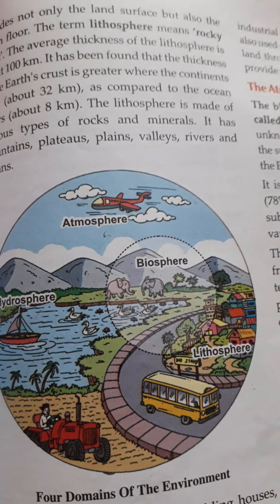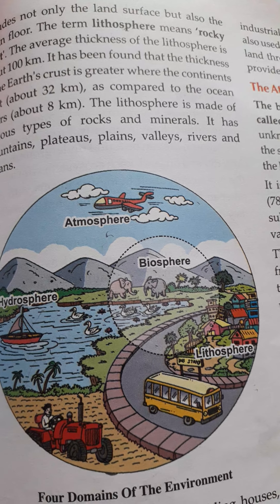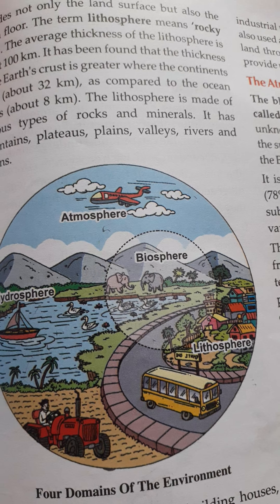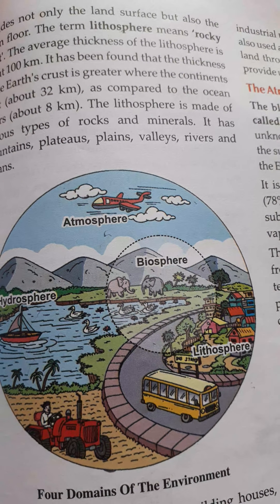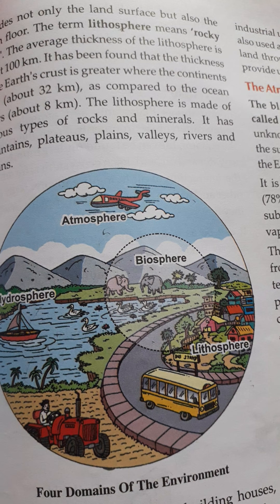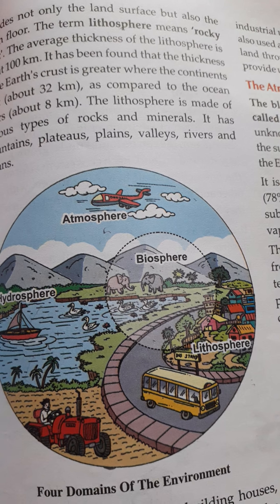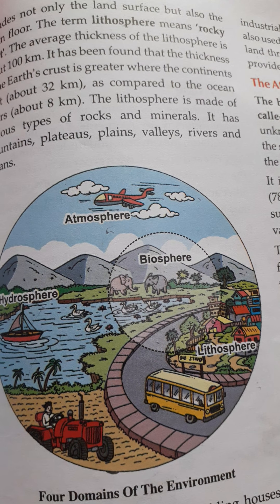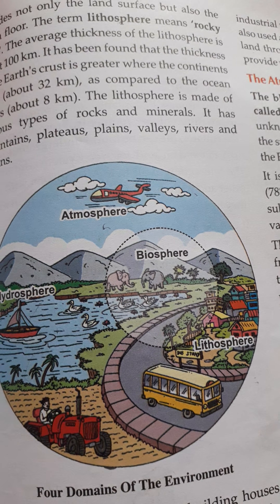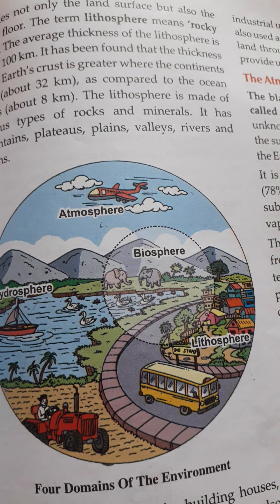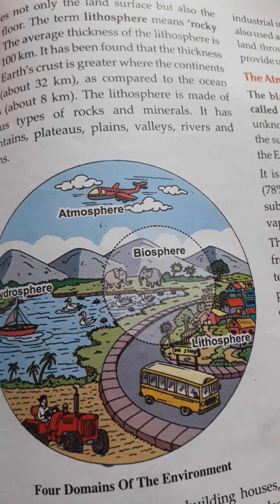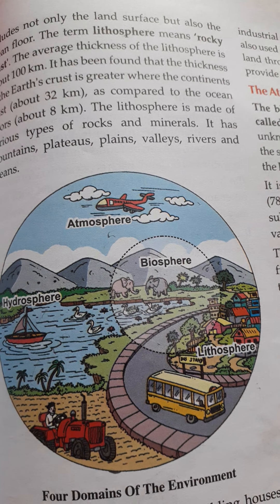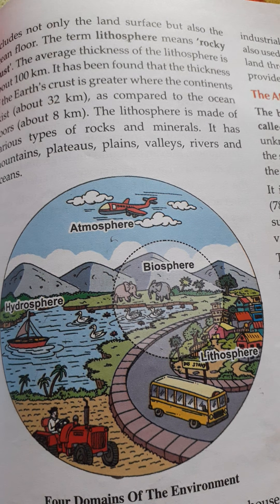One more concept related to biosphere and biodiversity is ecosystem. An ecosystem is a system in which a group of organisms in an area interact with each other and live together with their non-living environment. A particular area in which different species of plants and animals interact and live together with both living and non-living environments is called an ecosystem.